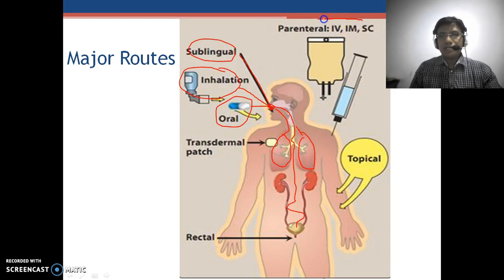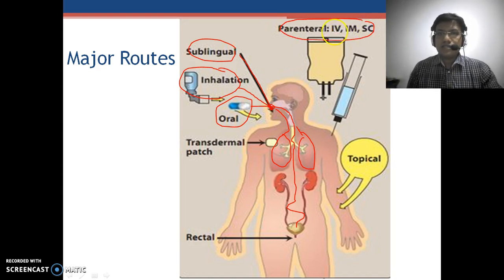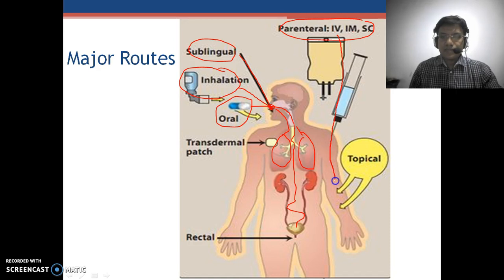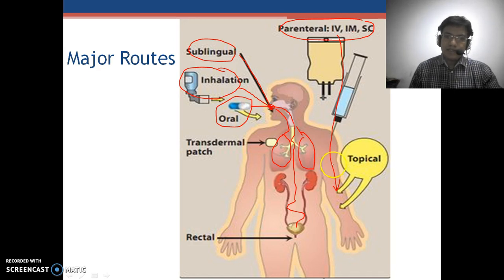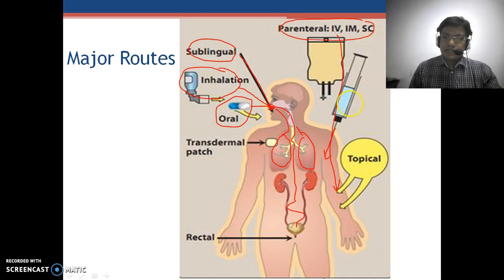If we talk about the parenteral route, it majorly covers three types: intravenous, intramuscular, and subcutaneous. For the intravenous route, the drug is administered by the vein. For intramuscular, the injection is given into the muscles. For subcutaneous, the drug is administered parenterally into the upper subcutaneous tissue.